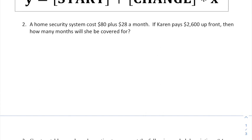Now let's move on to a problem that gives you a verbal description that you need to turn into an equation in order to solve the problem. In other words, a word problem. A home security system costs $80 plus $28 per month. So $80 is the starting amount that you're going to pay no matter what. And $28 is the changing amount. Every extra month that you use this system, you have to pay $28 more.